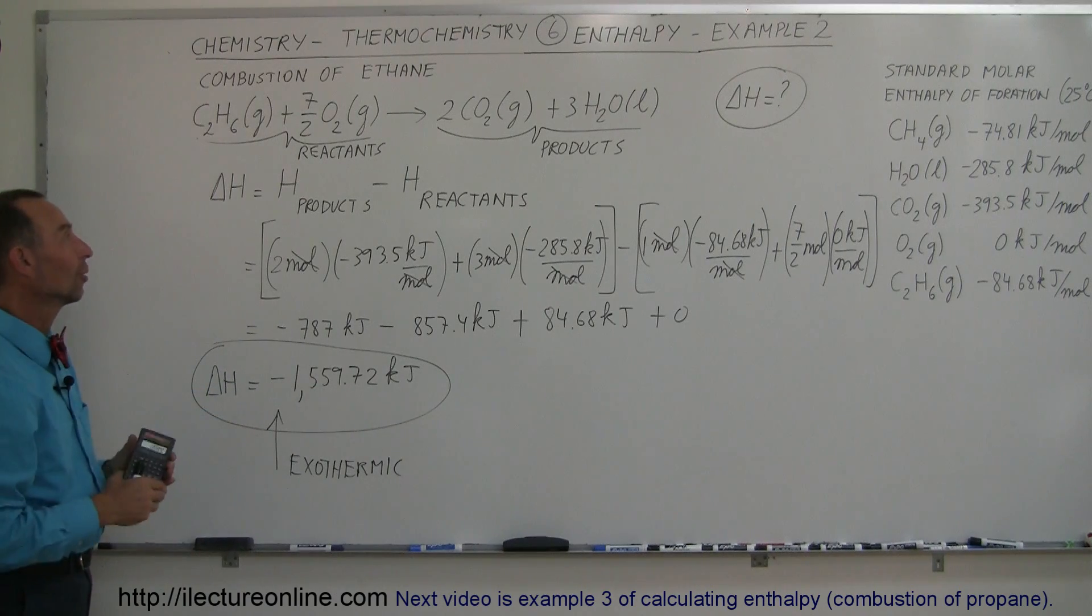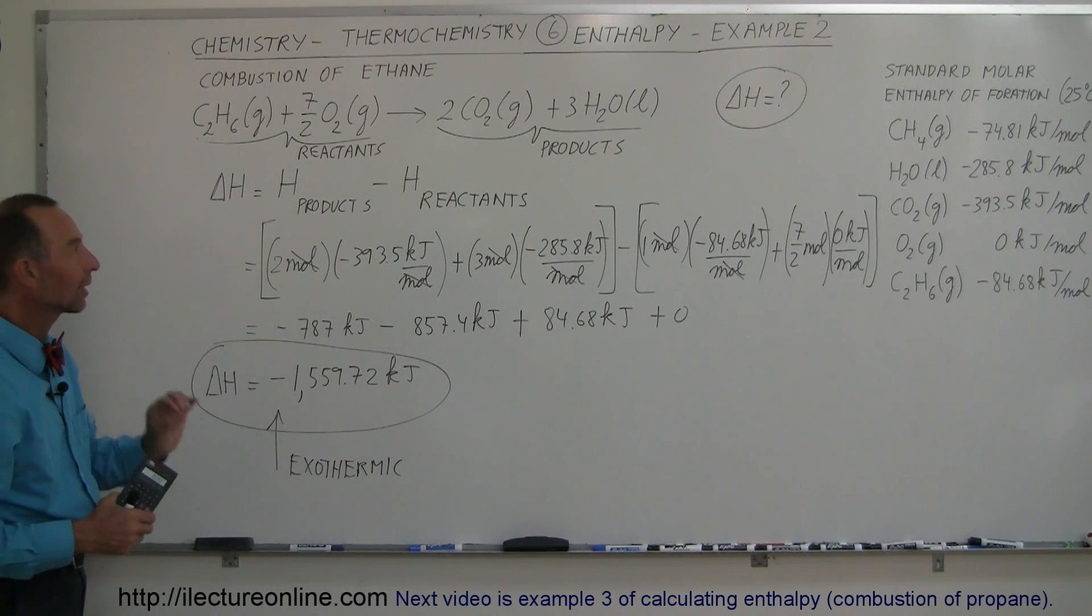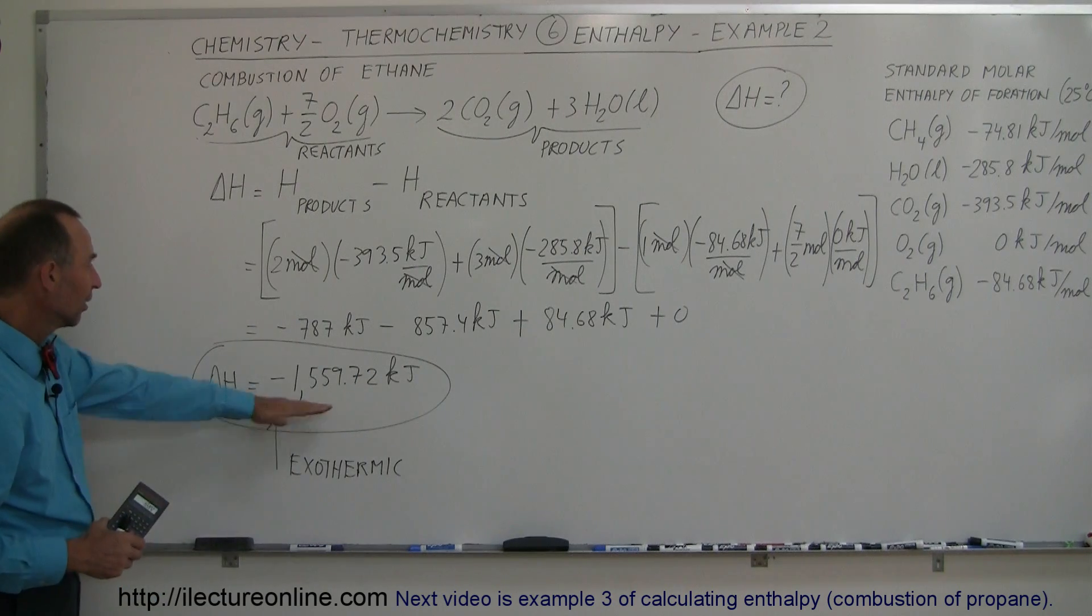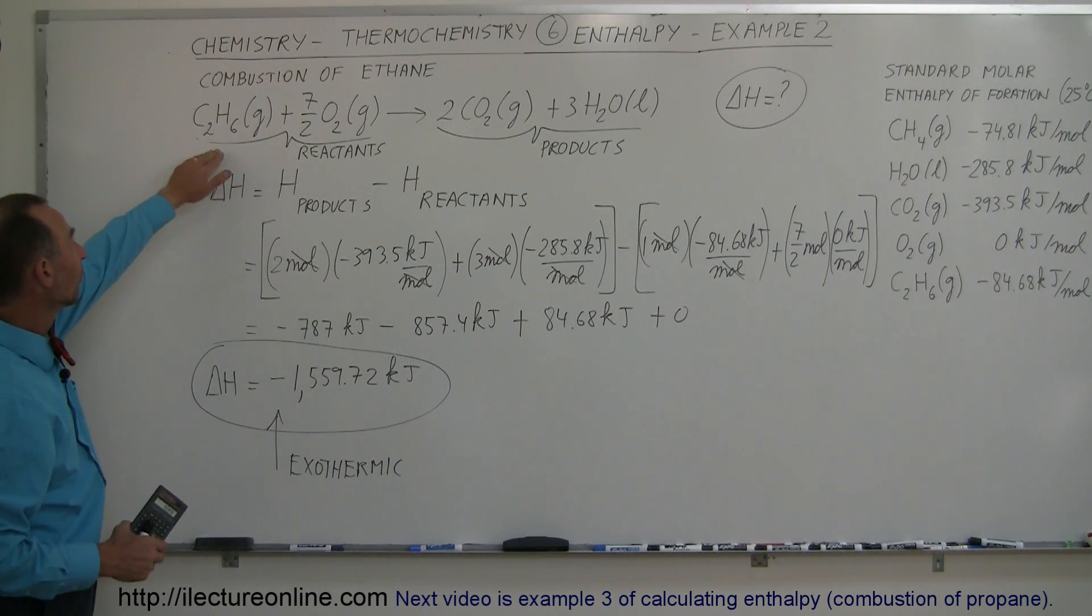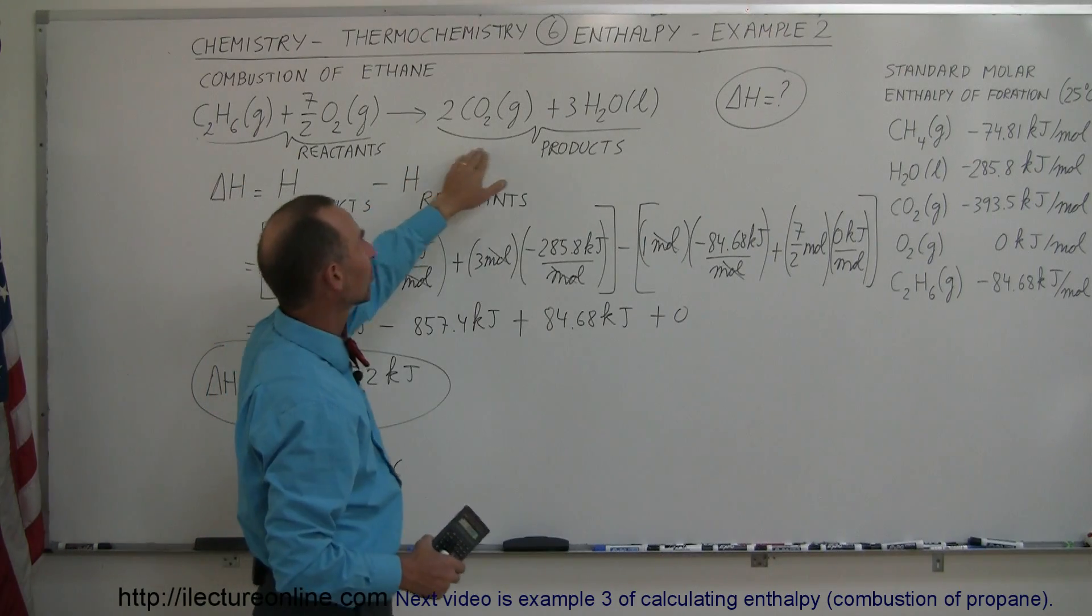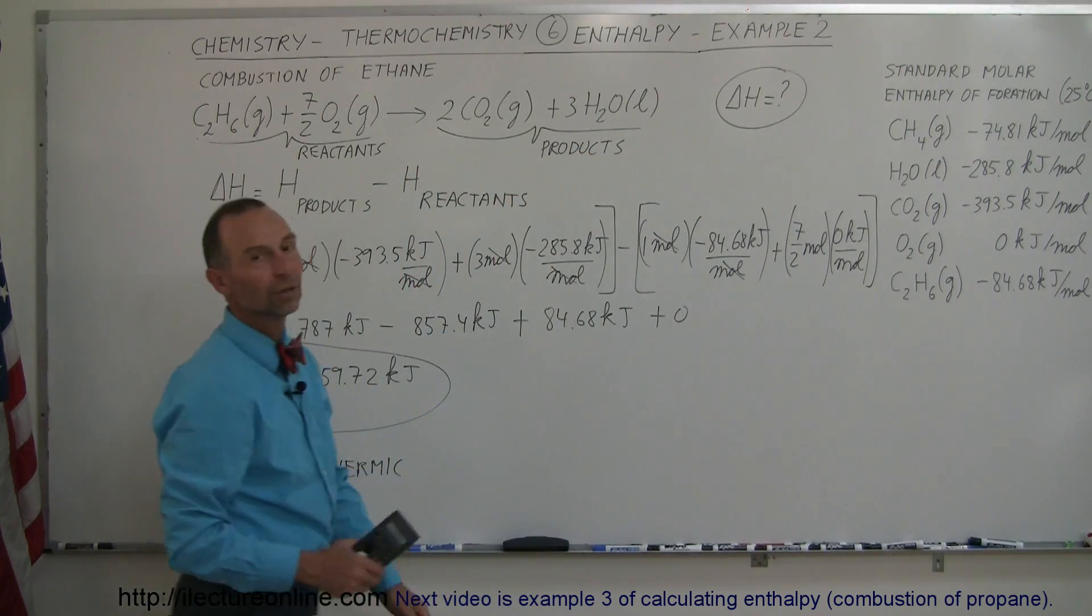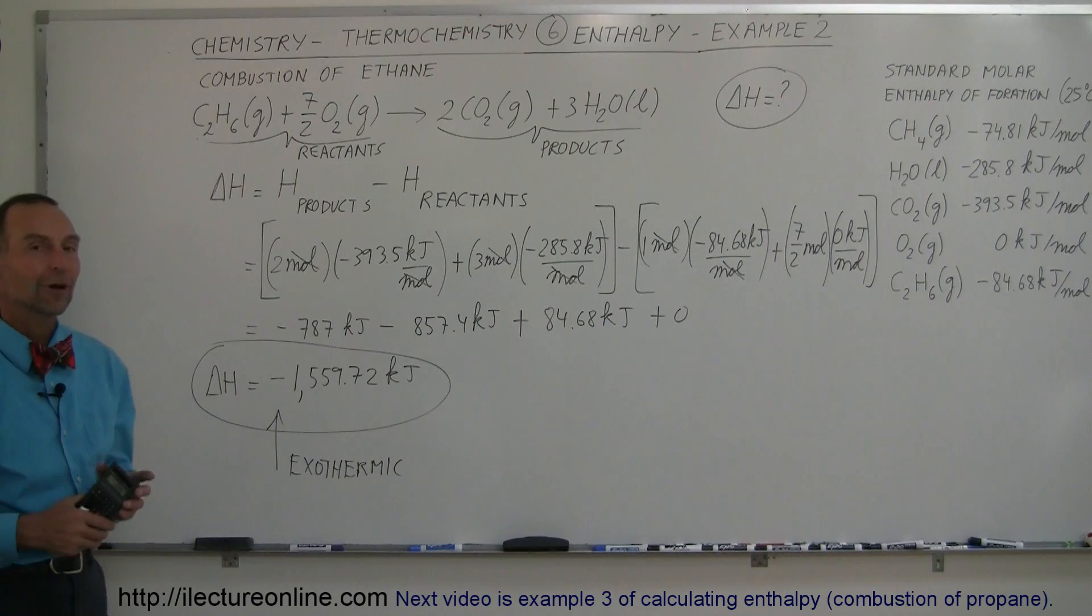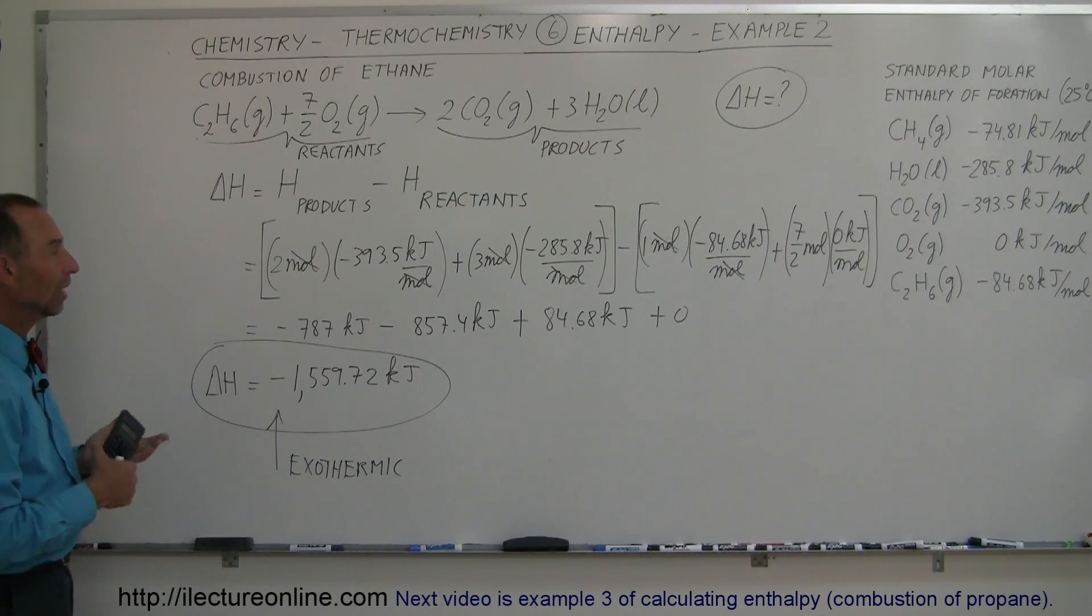Because normally when we put ethane and oxygen together, unless you have a source of flame or something like that, you will not get the reaction going on its own. But a little bit of flame, a little bit of spark, anything will get the reaction going, and now lots of energy will be produced. This much for one mole of ethane, three and a half moles of oxygen, producing two moles of carbon dioxide and three moles of water, and of course liquid water when it's cooled down to 25 degrees centigrade. And so here is another nice example of how we calculate the enthalpy change in a reaction.